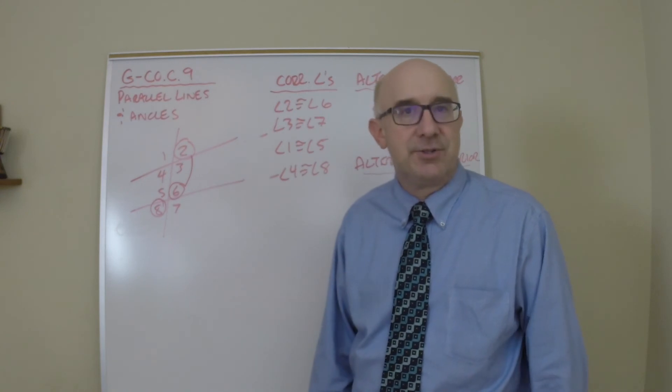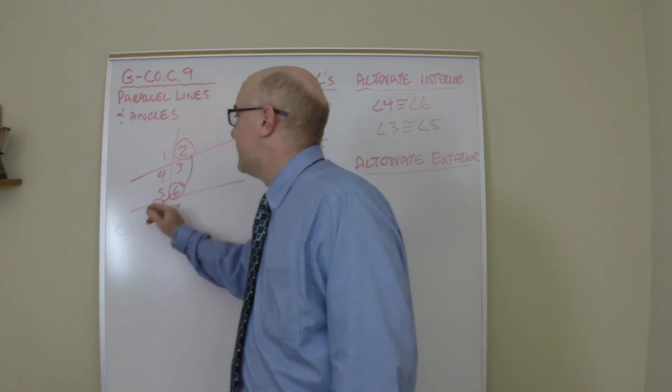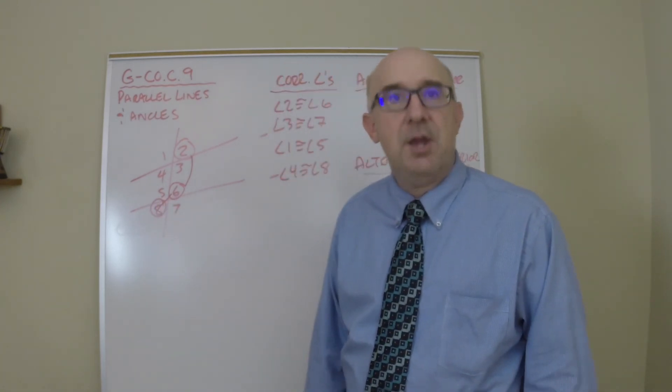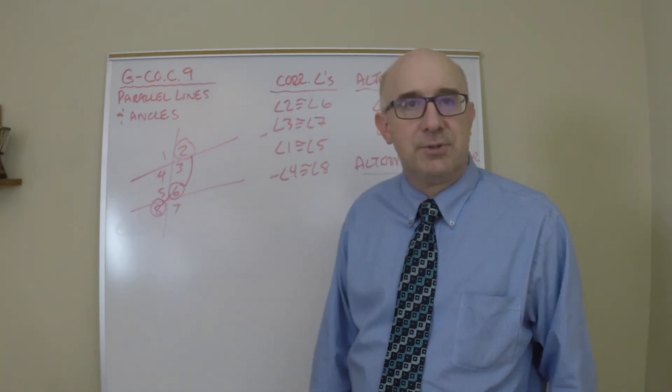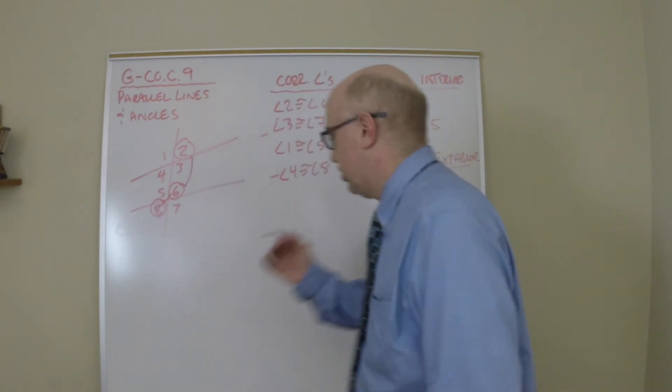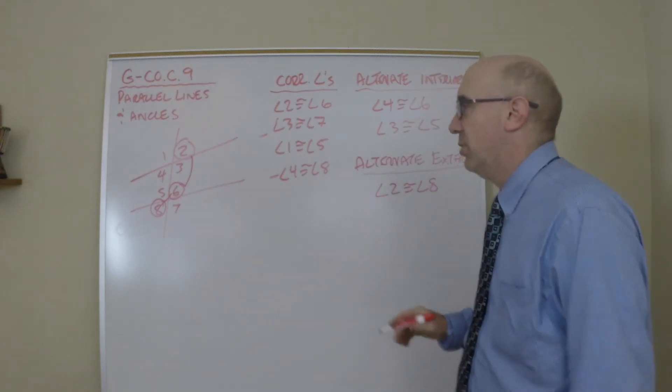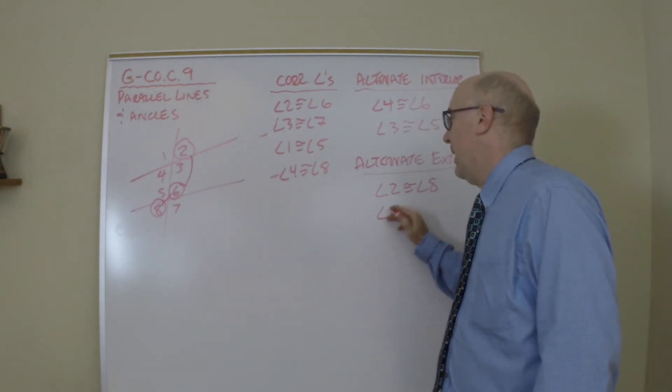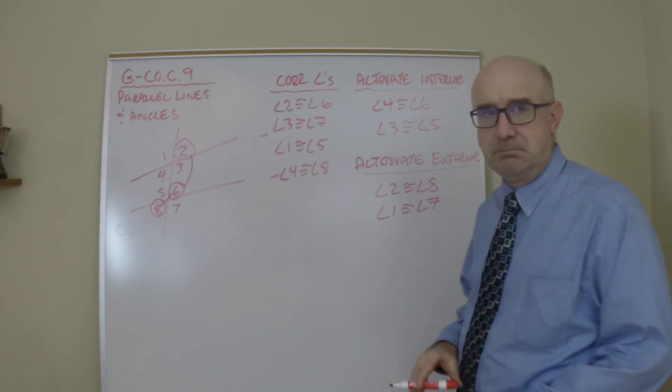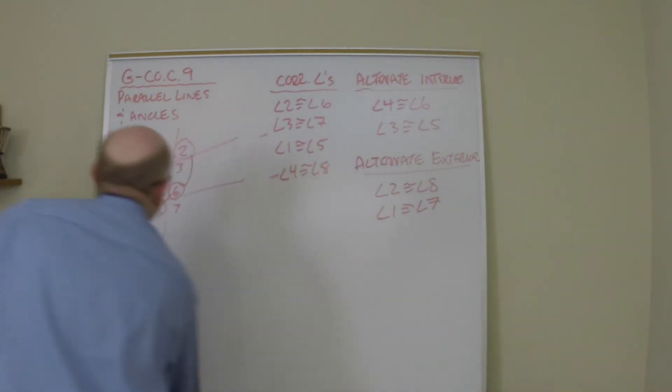Angle 2 is congruent to angle 6 because corresponding angles in parallel lines are congruent. Then we would say angle 6 is congruent to angle 8 because vertical angles are also congruent. Now, using the transitive property, angle 2 is congruent to angle 8. Also true would be angle 1 is congruent to angle 7. There are two more nice relationships hiding in here.